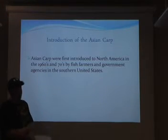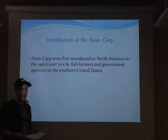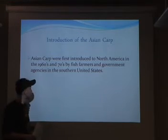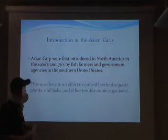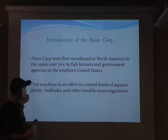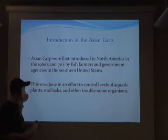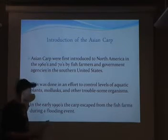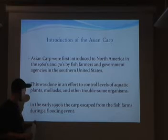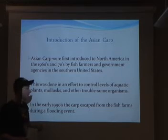Asian carp were first introduced to North America in the 1960s and 70s by fish farmers and government agencies in the southern United States, in an effort to control levels of aquatic plants, mollusks, and other troublesome organisms. In the early 1990s, the carp escaped from fish farms during periodic flooding events.